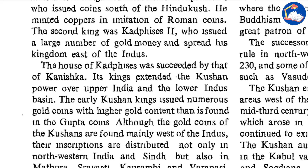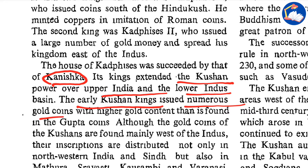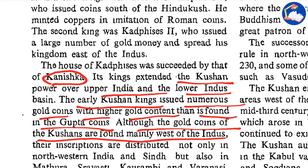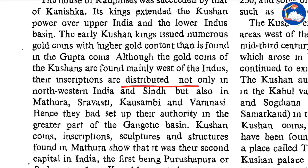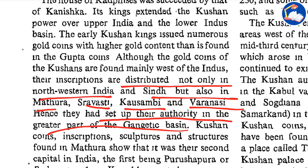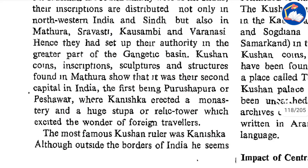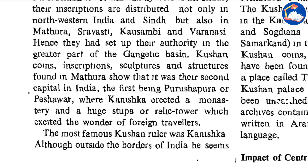The house of Kadphises was succeeded by Kanishka, another important figure. His kings extended Kushan power over upper India and the lower Indus basin. The early Kushan kings issued numerous gold coins with higher gold content than is found in the Gupta coins, although the gold coins of the Kushans are found mainly west of the Indus. Their inscriptions are distributed not only in northwestern India and Sindh but also in Mathura, Saraswati, Kaushambi and Varanasi — hence they had set up authority in the greater part of the Gangetic basin. Kushan coins, inscriptions, sculptures and structures found in Mathura show that it was their second capital in India.